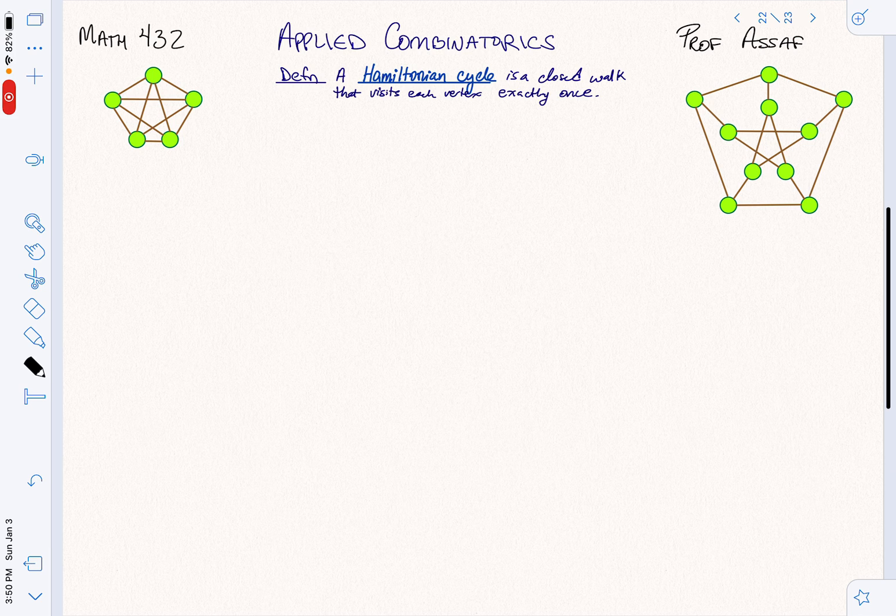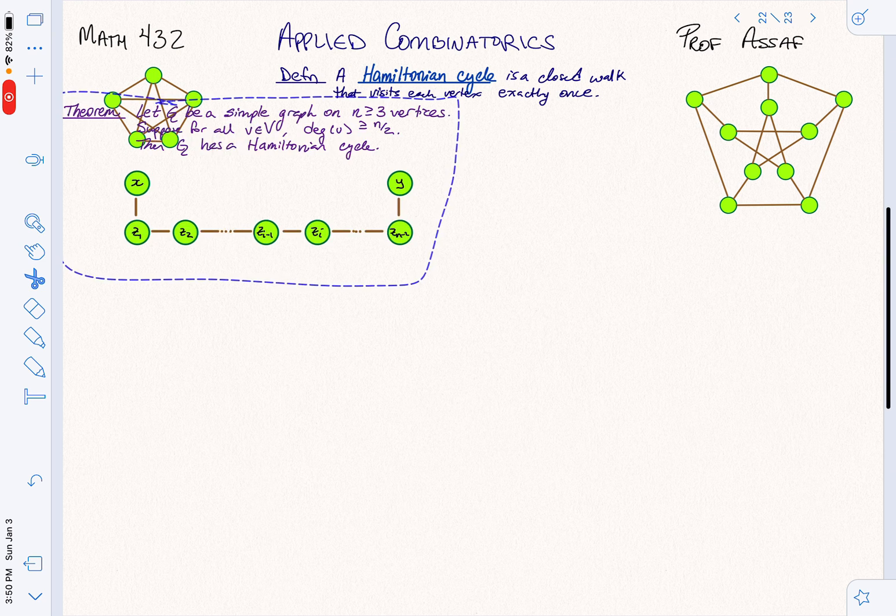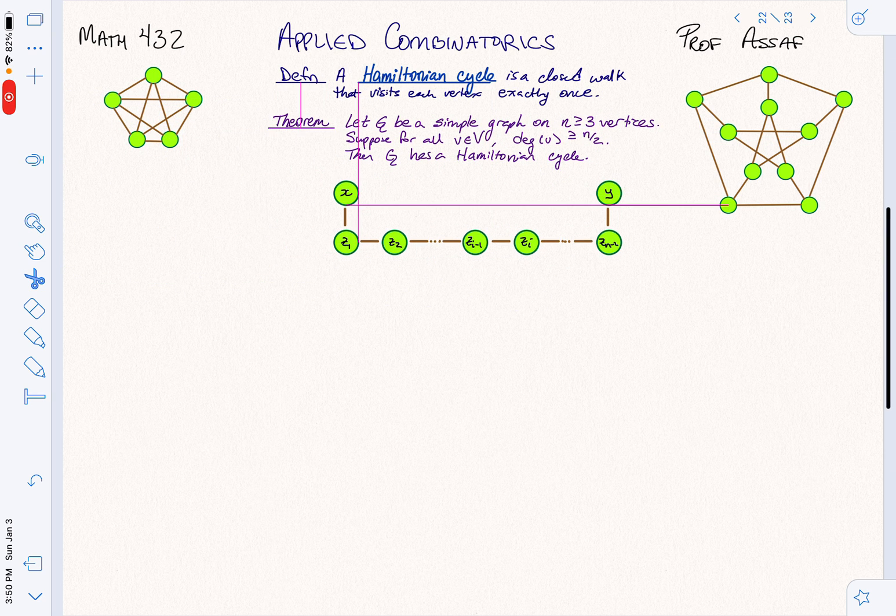At least, assuming that P does not equal NP, it's much harder. But we can still say a few things. Why does this graph over here, which is K5, have a Hamiltonian cycle, but this graph, which is called the Peterson graph, doesn't? And the idea is how densely packed it is with edges. The more edges we have, the more possible roots we have, the easier it is to find a Hamiltonian cycle. Let's make that a little rigorous.